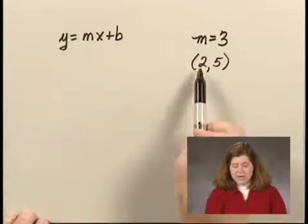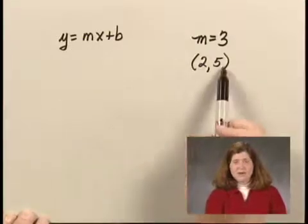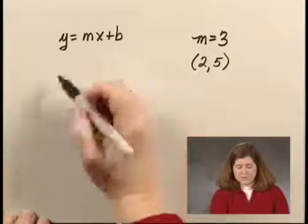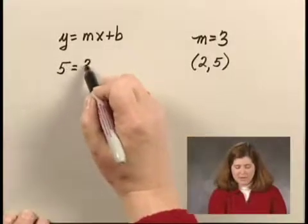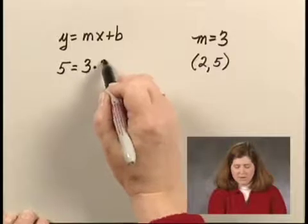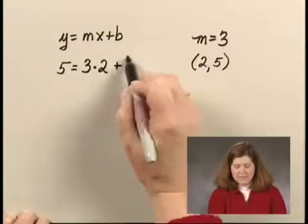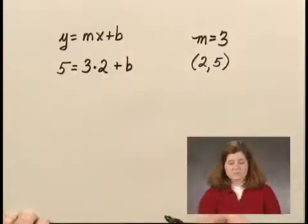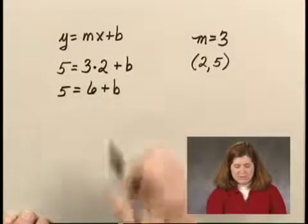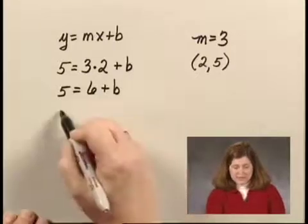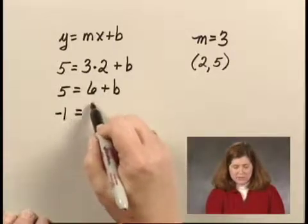So if I substitute 5 for y, 3 for m, 2 for x, I can solve for b. I have 5 equals 6 plus b. Subtracting 6 from both sides, I have negative 1 equals b.